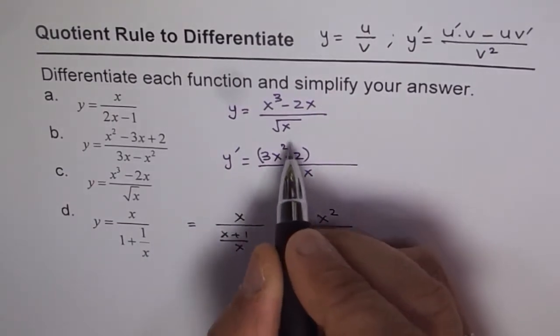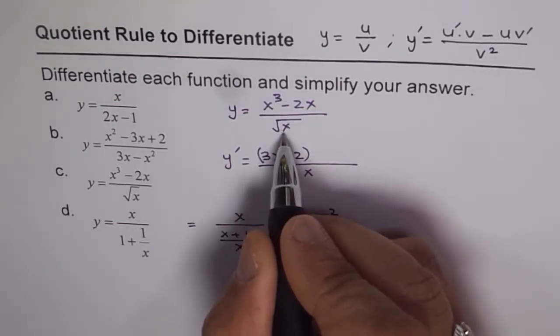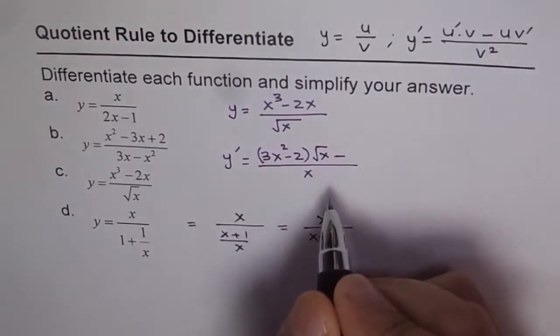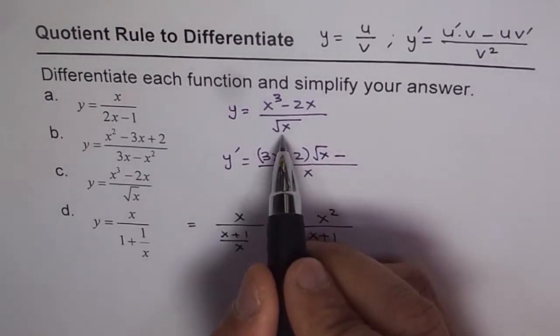Now this whole thing should be multiplied by the denominator, which is v, which is square root of x. Minus. Now write the derivative of denominator.